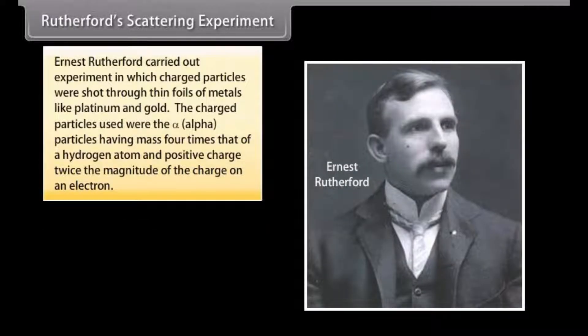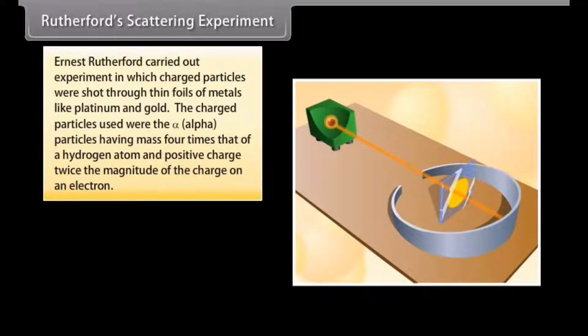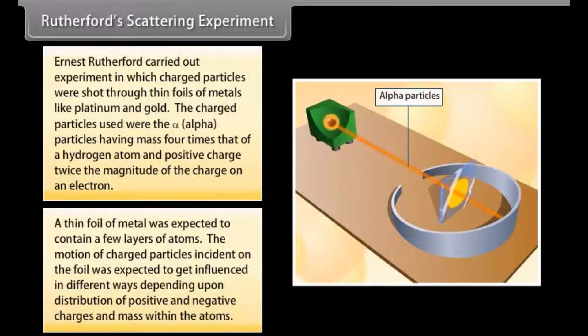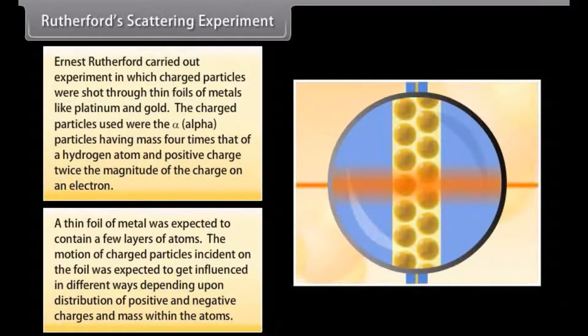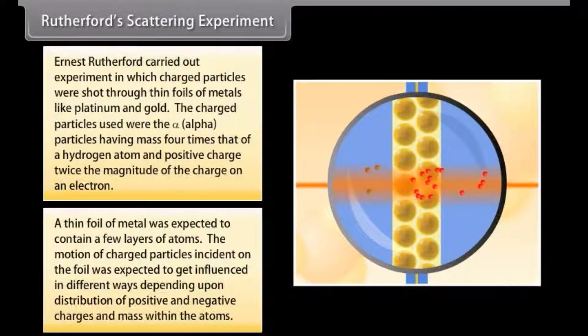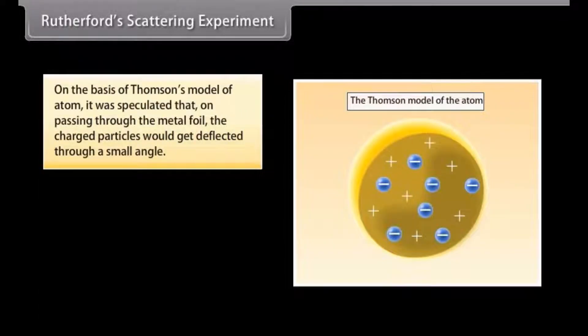Rutherford Scattering Experiment. Ernst Rutherford carried out experiment in which charged particles were shot through thin foils of metals like platinum and gold. The charged particles used were the alpha particles, having mass four times that of a hydrogen atom and positive charge twice the magnitude of the charge of an electron. A thin foil of metal was expected to contain a few layers of atoms. The motion of charged particles incident on the foil was expected to get influenced in different ways depending upon distribution of positive and negative charges and mass within the atoms. On the basis of Thomson's model of atom, it was speculated that on passing through the metal foil, the charged particles would get deflected through a small angle.